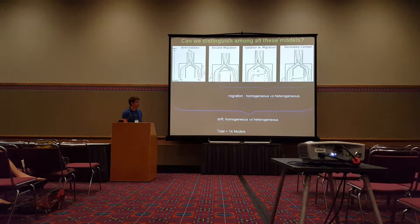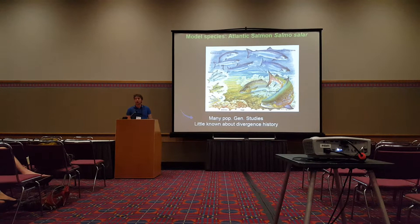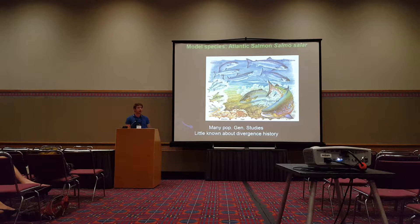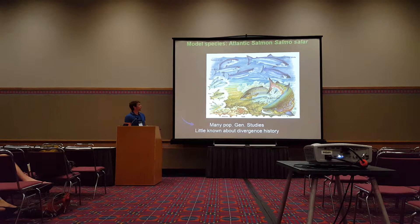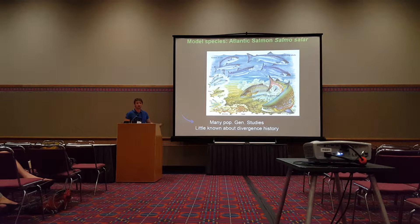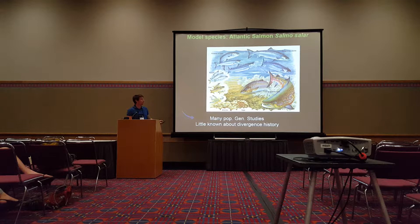I applied this model to an iconic species: the Atlantic salmon. There is a lot of population genetics study on Atlantic salmon, but we know little about its demographic history of divergence. The salmon reproduce in rivers, but the offspring grow until they reach a smolt stage, where they migrate to the sea to feed and become bigger. They often return to the river where they were born to breed again, a strong homing behavior that facilitates local adaptation and population structure.